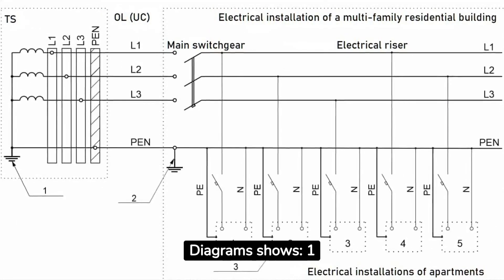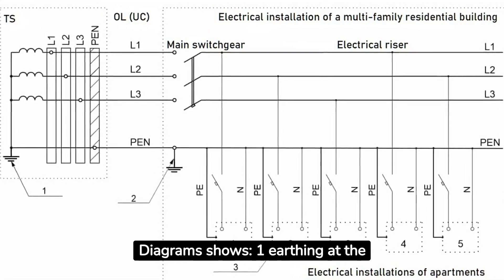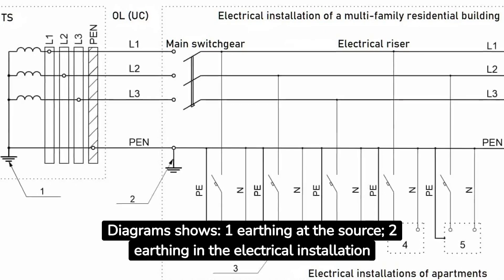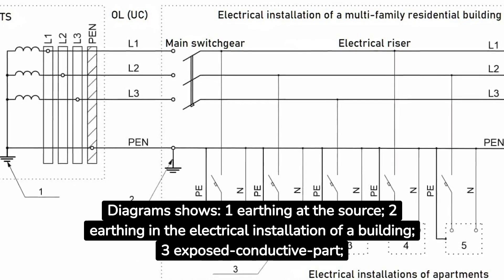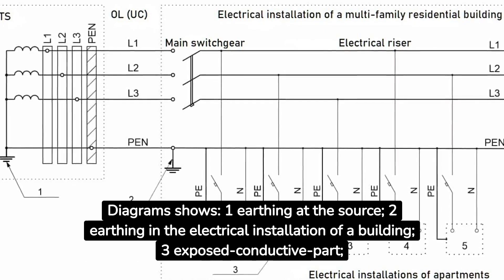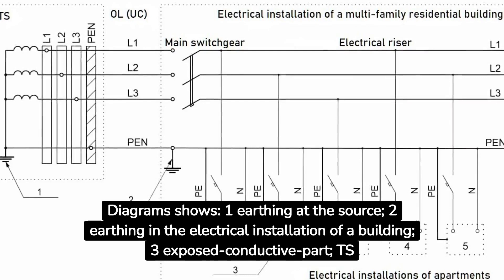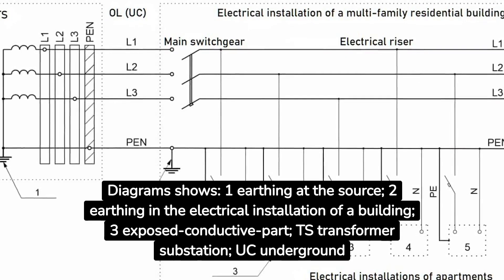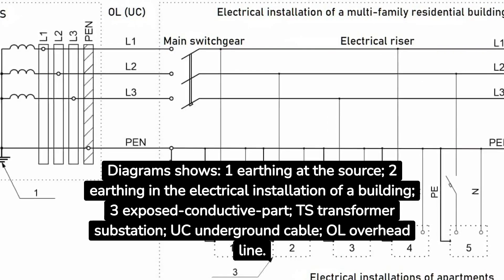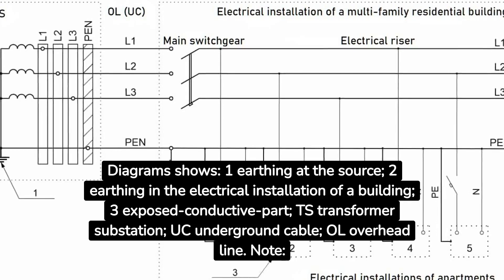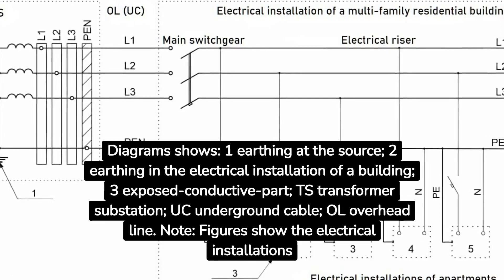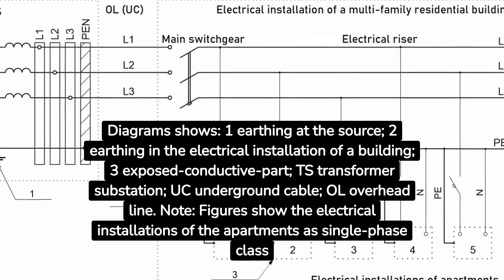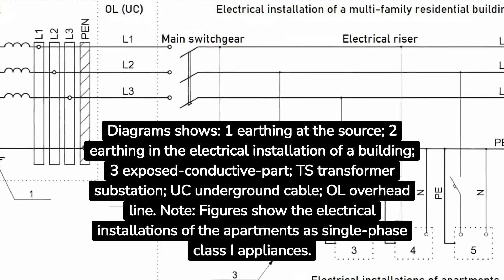The diagrams show: (1) earthing at the source, (2) earthing in the electrical installation of a building, (3) exposed conductive part. TS = transformer substation, UC = underground cable, OL = overhead line. Note: the figures show the electrical installations of the apartments as single-phase Class I appliances.